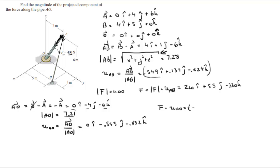And this is the same as the force is 220i plus 55j minus 330k dot 0i minus 0.555j minus 0.832k. So 220 times 0 is 0, 55 times negative 0.555 is negative 30.5, and negative 330 times negative 0.832 is positive 274.5. So this comes out to be 244.